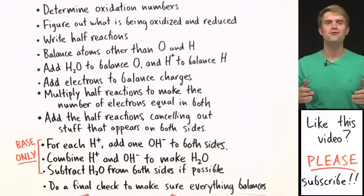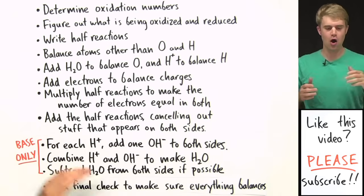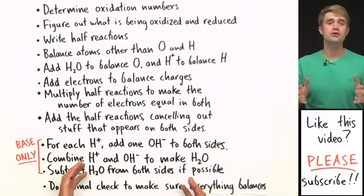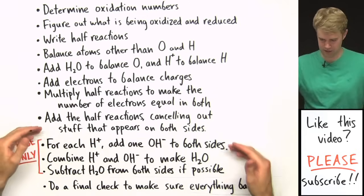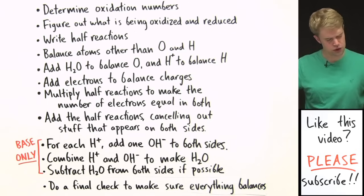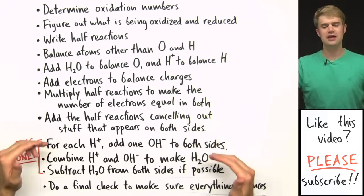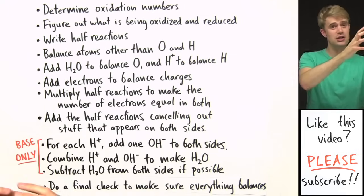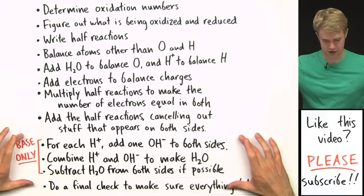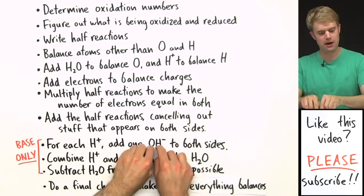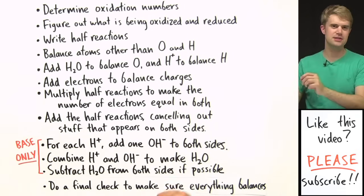So these are the steps for balancing a redox reaction in basic solution. Most of these steps are used for balancing in both acidic and basic solution, except for these three extra steps, which are used only for balancing in base. Balancing in acidic solution gives us H⁺, and so these extra steps for basic solution use OH⁻ to get rid of those H⁺ and make it a basic solution.